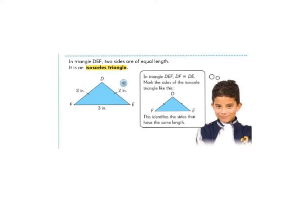So in triangle DEF, the sides FD and DE are equal to each other.